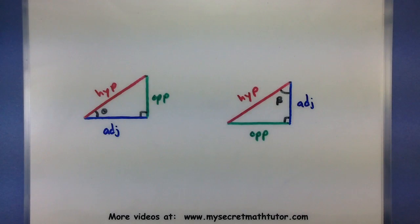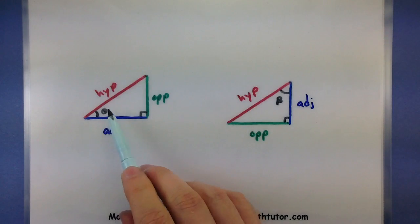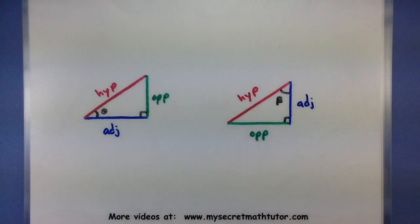So when we look at the value for our trigonometric functions, we'll look at what angle is given so we can identify adjacent, opposite, and hypotenuse. Alright, let's look at an example and find some trigonometric functions.